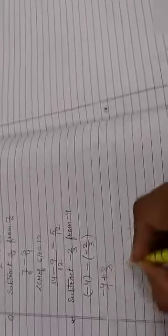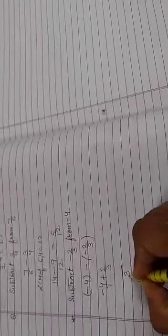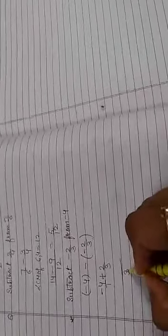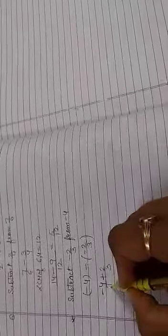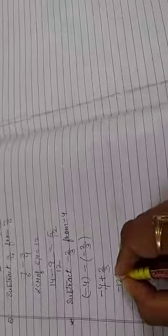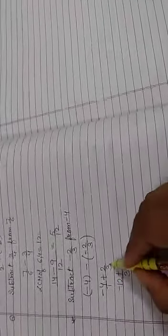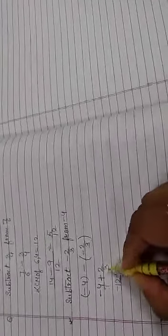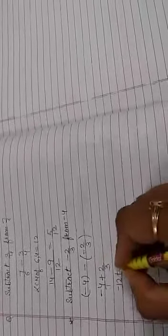Now take LCM, 3. 3 divided by 1 is 3, 3 into minus 4 is minus 12. 3 divided by 3 is 1, 1 multiplied 2 is 2.